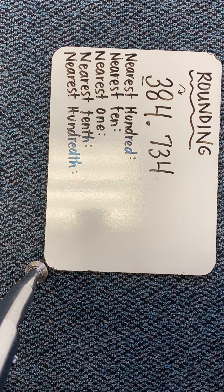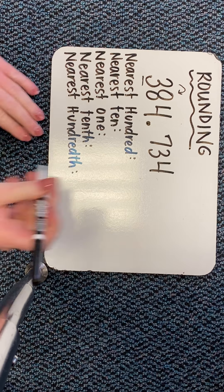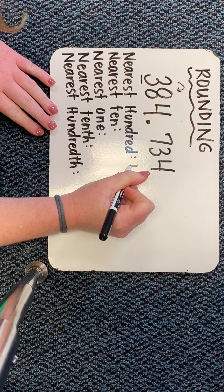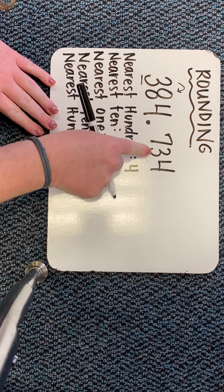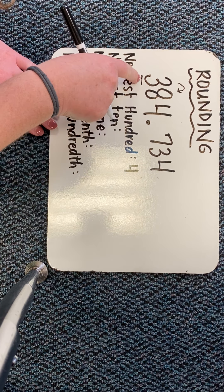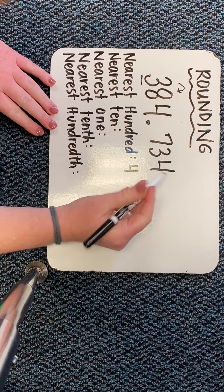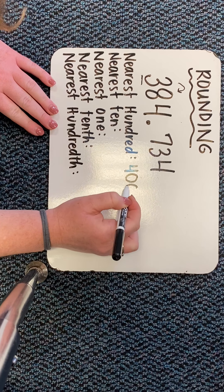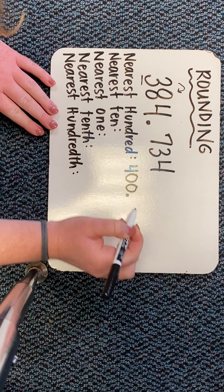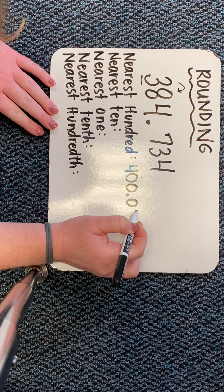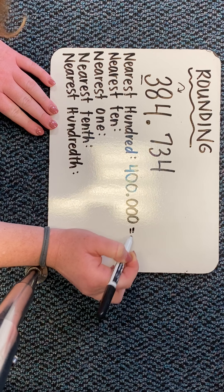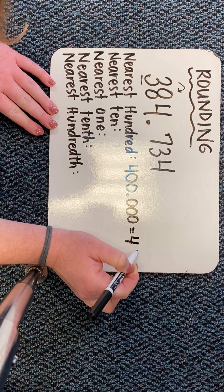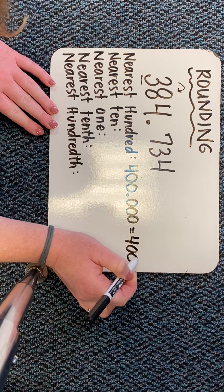Nice job boys and girls. It will become a four, which means every other number after that underlined digit is going to become a zero. And that's the same as just saying it's 400.